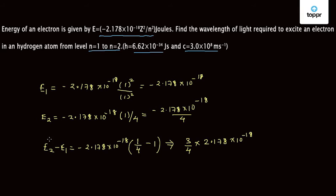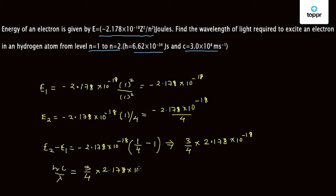This transition is supported by light striking the atom. Let the wavelength of the corresponding light be lambda. By Planck's relation, the energy of light is E = hc/λ. Setting this equal to ΔE: hc/λ = 3/4 × 2.178 × 10⁻¹⁸.